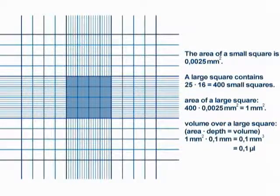Considering the depth of the chamber, 0.1 mm, the volume over a large square is 0.1 mm³, or 0.1 µL.